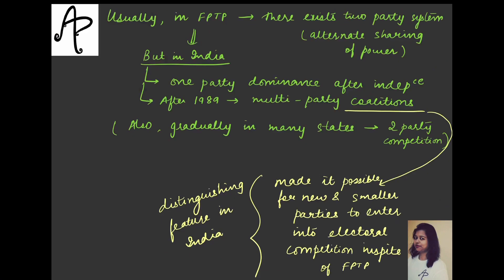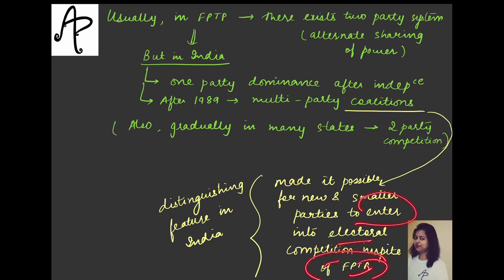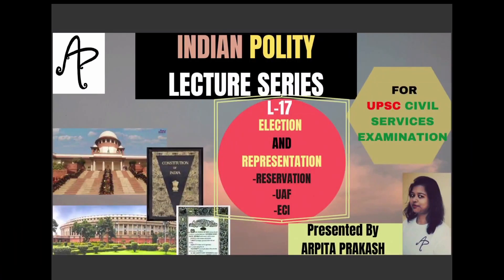Generally in FPTP countries a two-party system exists, with parties alternately sharing power. But in India things are different. After independence, one party's dominance was visible for a long time. But after 1989 we saw the rise of multi-party coalitions, which made it possible for smaller and new parties to enter the competition despite FPTP. India shows a distinguishing feature — the emergence of coalition systems, though two-party competition is also seen in many states.